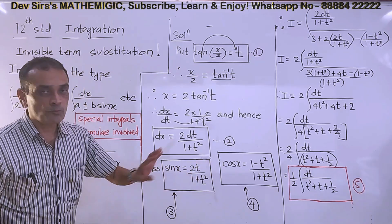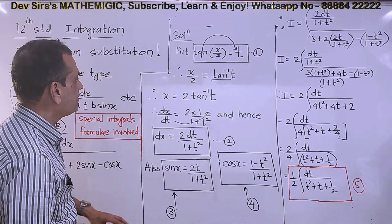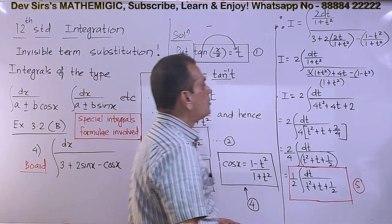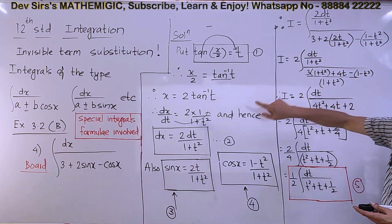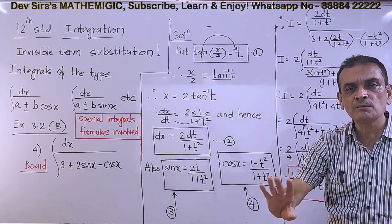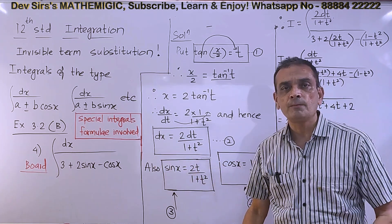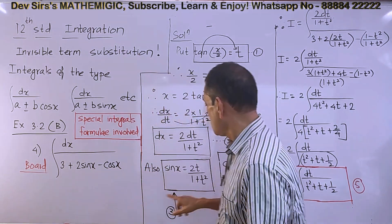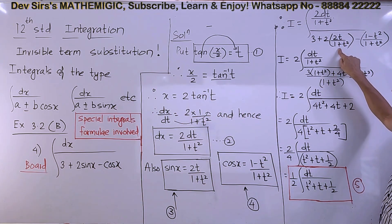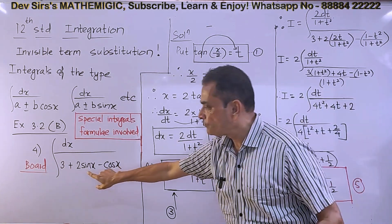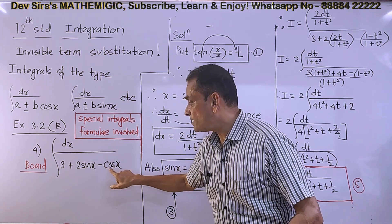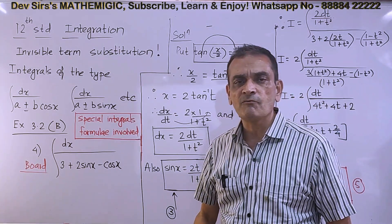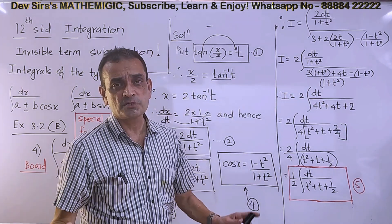Now all these values I am going to put in the integral. dx becomes 2dt/(1+t²). Then we have 3 + 2sin x - cos x in the denominator. Sin x becomes 2t/(1+t²), and cos x becomes (1-t²)/(1+t²). These are half angle formulas. Just remember the substitutions.